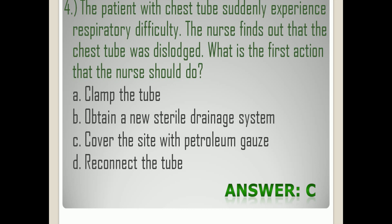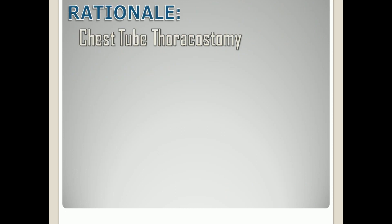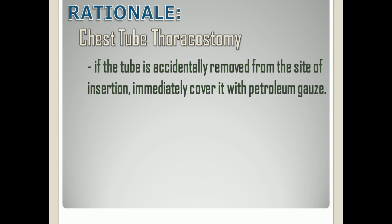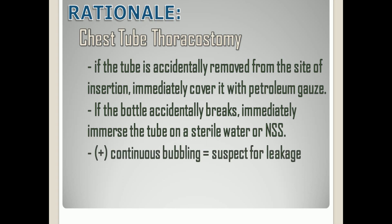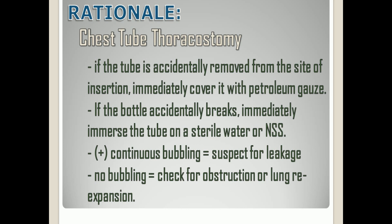The correct answer is letter C. Rationale: Since the chest tube is being dislodged and the patient is experiencing respiratory difficulty, the priority is to cover the site with petroleum gauze, then report it to the physician. If the tube is accidentally removed from the site of insertion, immediately cover it with petroleum gauze. There should always be petroleum gauze and an extra sterile water or NSS at the bedside in case of emergency. If there is continuous bubbling in the water seal or suction control bottle, suspect leakage. If there is no bubbling in the water seal or suction control bottle, check for obstruction or lung re-expansion.